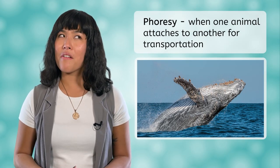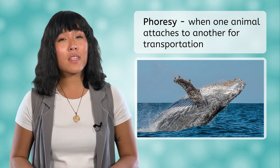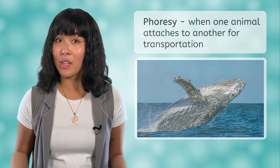Have you ever looked closely at a picture of a humpback whale and noticed bumps that look like shells all over its body? These shells are actually filter-feeding crustaceans called barnacles that are hitching a ride on the whale. This type of commensalism is called phoresy. Can you think of another example of phoresy from this video? The zebra and the heron.